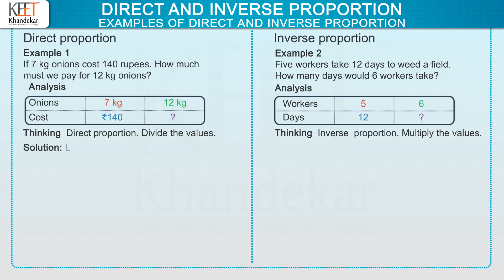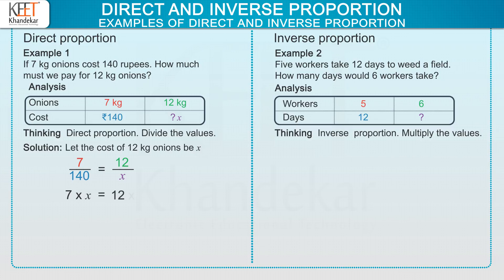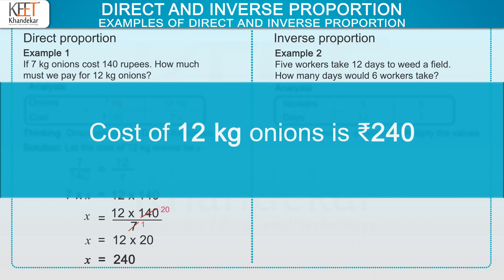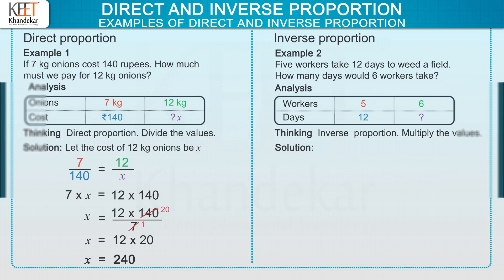Now solve example 1. Let the cost of 12 kg onions be x rupees. Here, as there is direct proportion, so divide the values. So we get 7 upon 140 equals 12 upon x. Now cross multiply. So we get 7 into x equals 12 into 140. Now transfer the 7 to the right hand side. So we get x equals 12 into 140 upon 7. On reducing 140 and 7, we get x equals 12 into 20, that is x equals 240. Therefore, the answer is cost of 12 kg onions is 240 rupees.